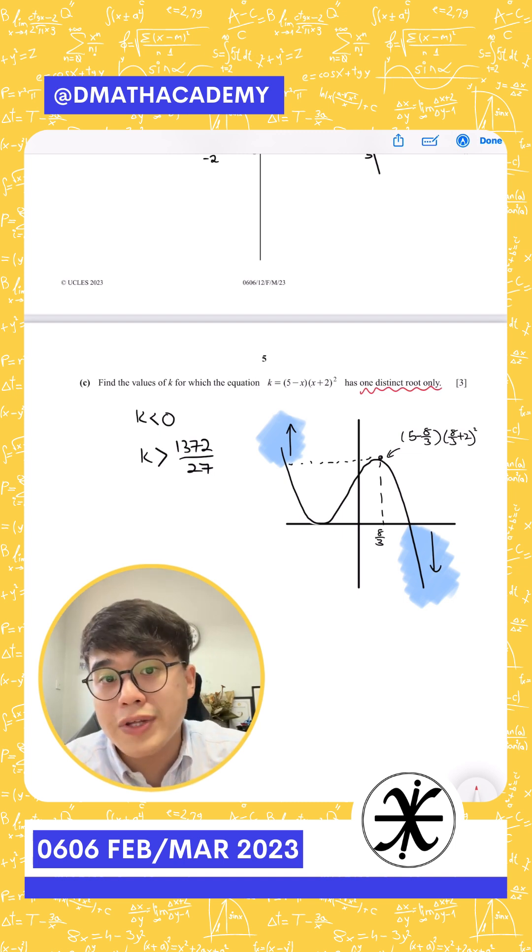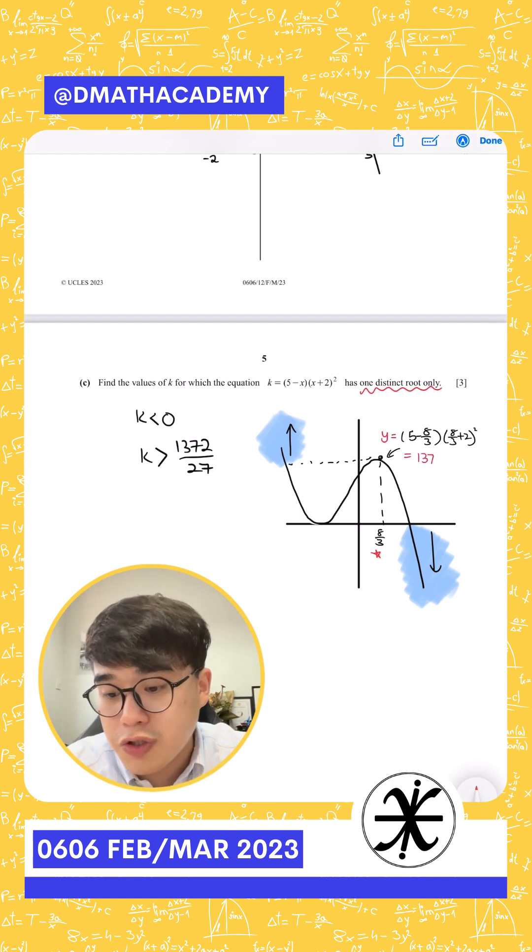What they want you to do is to utilize the graph that you sketched earlier, and also the turning point, where you substitute the 8 over 3 into the equation, and you ended up with 1372 over 27.